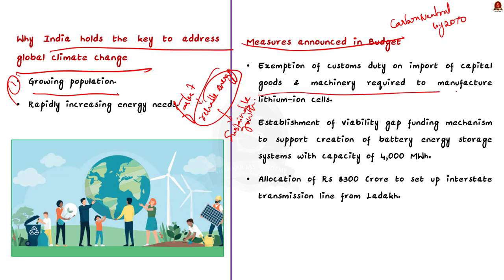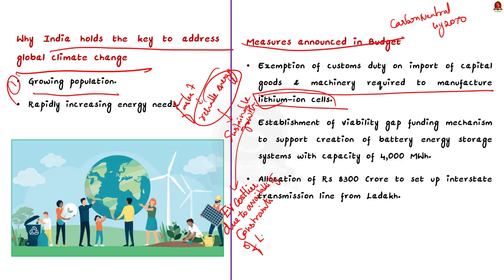Firstly, India has decided to exempt customs duty on the import of capital goods and machinery required to manufacture lithium-ion cells. All major automobile manufacturers in India have started rolling out electric vehicle models, but uptake of EVs is still low due to high cost compared to conventional vehicles. This is because indigenously produced lithium-ion batteries are not sufficient. This exemption will boost domestic manufacture of lithium-ion batteries and in turn make EVs cheaper.